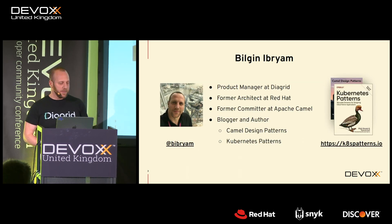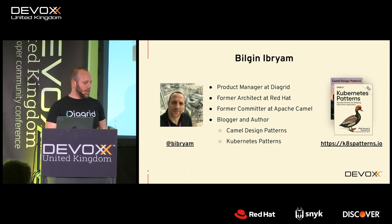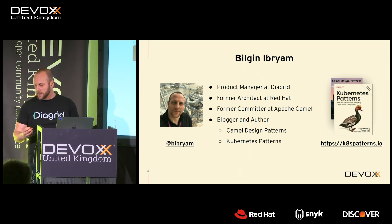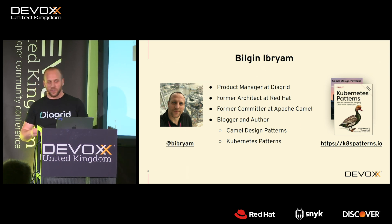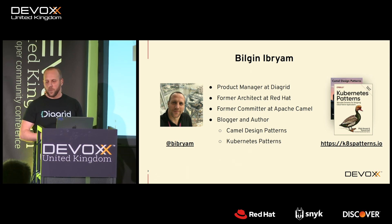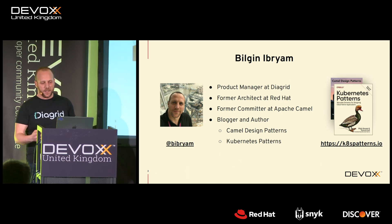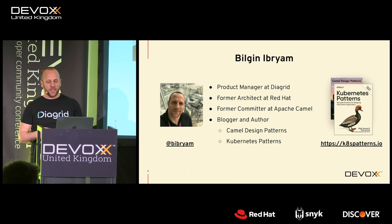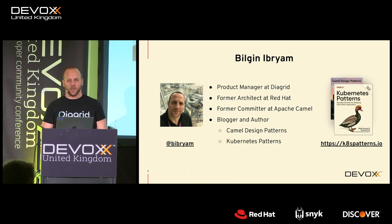My name is Bilgin Ibrahim. I'm product manager at Diagrid, where we are building tools and APIs based on the Dapr project. Before that, I was a consultant architect at Red Hat for many years, where I used Red Hat middleware and Kubernetes, and I have a book about it. If you want to grab a free sponsored copy, you can get it from this link.